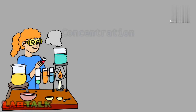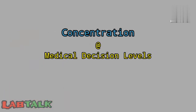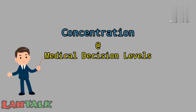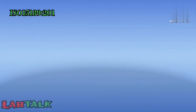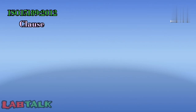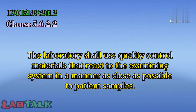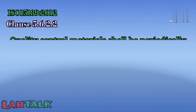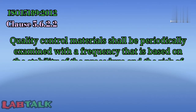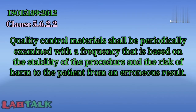Control material contains analytes which are determined by the laboratory, ideally at concentrations where decision limits are required for medical action. As per ISO 15189:2012, clause 5.6.2.2, the laboratory shall use quality control material that reacts to the examining system in a manner as close as possible to patient samples. Quality control material shall be periodically examined with a frequency based on the stability of the procedure and the risk of harm to the patient from an erroneous result.